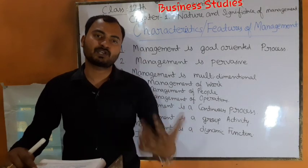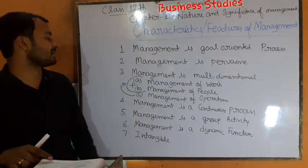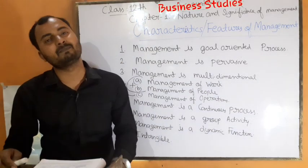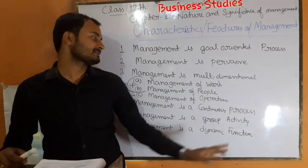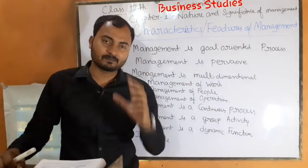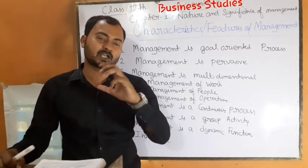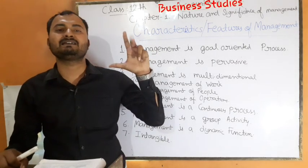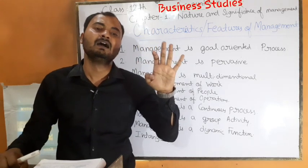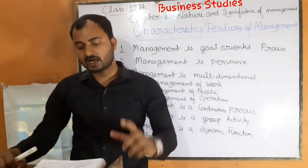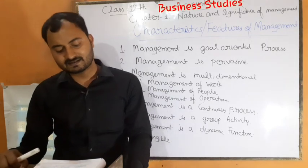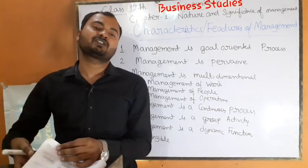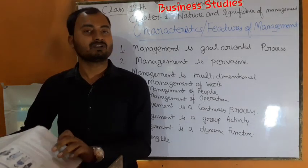Fourth point: management is a continuous process — a never-ending process। Management में कुछ functions continuously perform होते हैं। ये 5 functions हैं: planning, organizing, staffing, directing, और controlling। Management is a continuous or never-ending function — all functions of management are performed continuously in an organization।